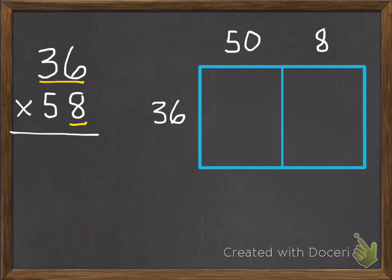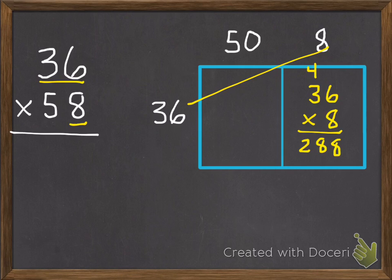Here's my second example: 36 times 58. I'm going to use a model to help me. So I broke apart my 58 into 50 and 8. We multiply our ones first, so the 8 times the 36. I'm going to do that on my model: 36 times 8. 6 times 8 is 48. 3 times 8 is 24 plus 4 is 28.